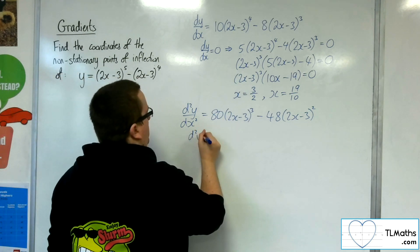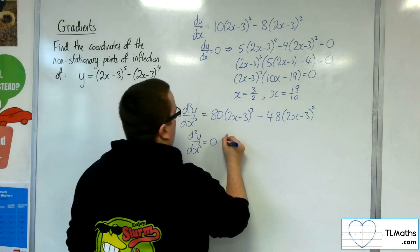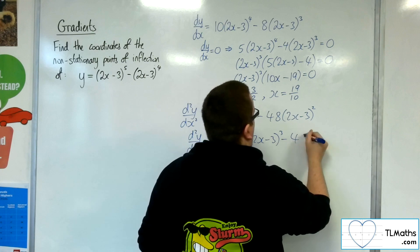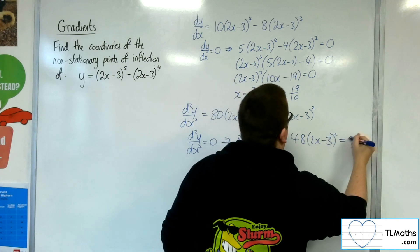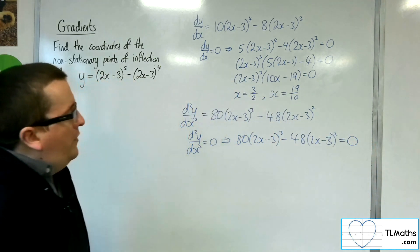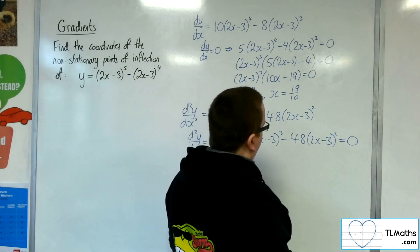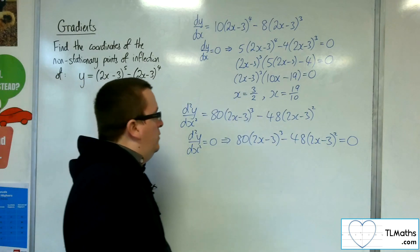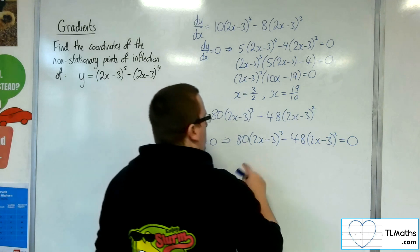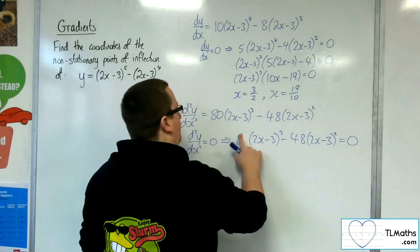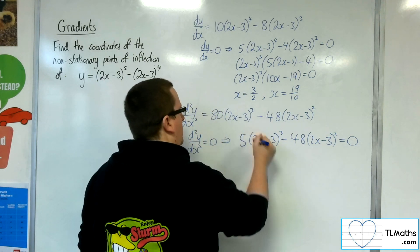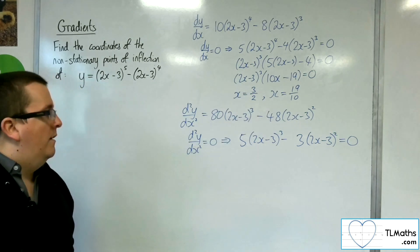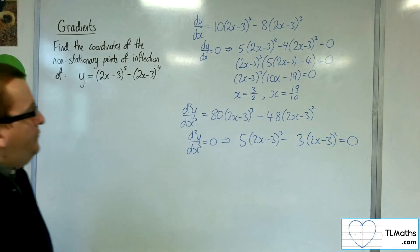So now I want to put the second derivative equal to 0. We've got 80 lots of 2x minus 3 cubed takeaway 48 2x minus 3 squared is 0. I'd want to divide through by, what would it be, 16. I could divide through by 8, I could divide through by 2 after that. So dividing through by 16, I would get 5 there and I would get 3 there. Once again, I'd write a new line if I was doing this in the exam.